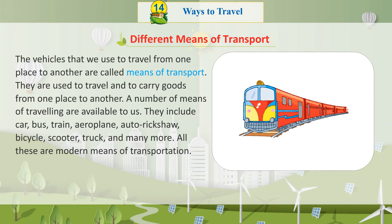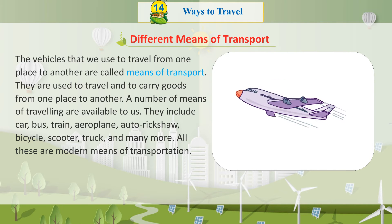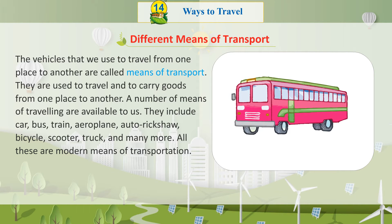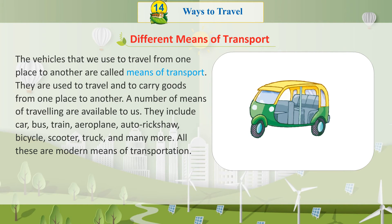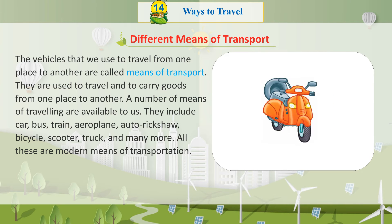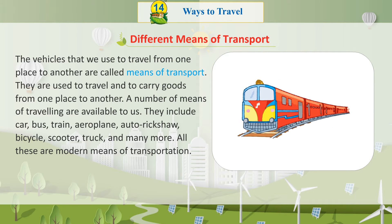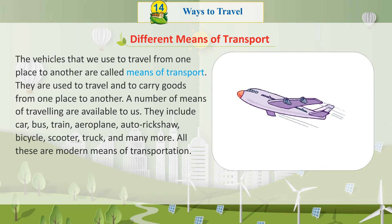A number of means of travelling are available to us. They include car, bus, train, aeroplane, auto rickshaw, bicycle, scooter, truck, and many more. All these are modern means of transportation.